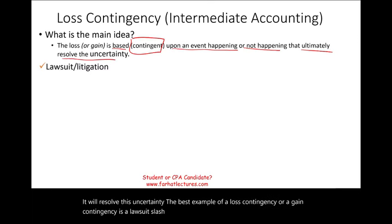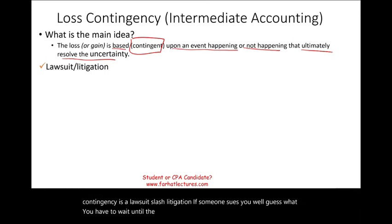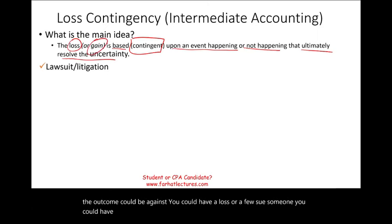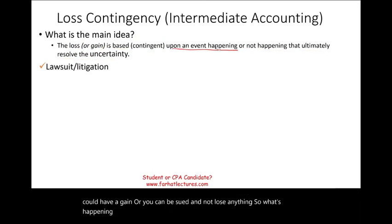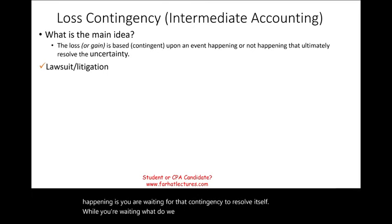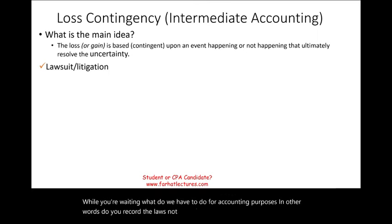If someone sues you, you have to wait until the outcome. The outcome could be against you — you could have a loss — or if you sue someone, you could have a gain, or you can be sued and not lose anything. So you are waiting for that contingency to resolve itself. While you're waiting, what do we have to do for accounting purposes? Do you record the loss or not? Lawsuit is a good example.